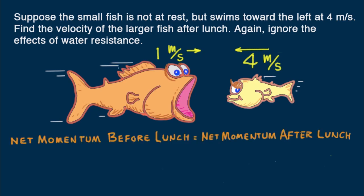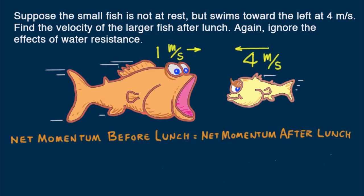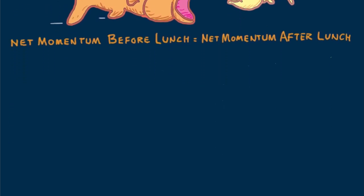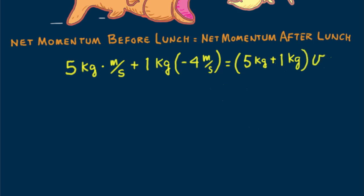As before, the net momentum before lunch equals the net momentum after lunch. We have the initial momentum of the large fish plus the initial momentum of the small fish with velocity equal to minus 4 meters per second. And after lunch, we have the combined mass times the velocity V that we're looking for.